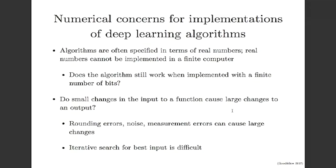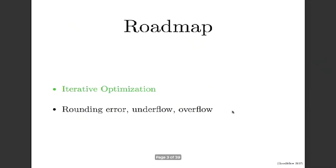Another consideration for numerical computation is how sensitive a function is to very small changes in its input. This comes up even if we could theoretically use real numbers without 32-bit representation. When we optimize a function that is very sensitive to tiny changes in input, it becomes much harder to search for the inputs that minimize it, because small changes in our search can strongly influence the outcome. As a roadmap, I'll cover two topics: iterative optimization and rounding error, underflow, and overflow.